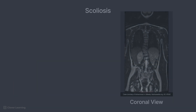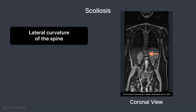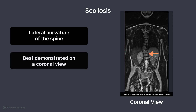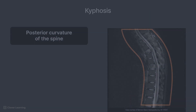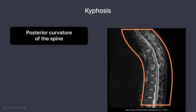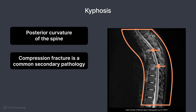Other bony pathology issues include scoliosis, which is the lateral curvature of the spine — a coronal image will demonstrate this best. Kyphosis is the posterior curvature of the spine, common in elderly female patients, and appears as a rounded back usually in the thoracic area with a stooped appearance. A secondary pathology to kyphosis is a compression fracture, which occurs when the vertebral bodies collapse on themselves, and is common in patients with osteoporosis or extreme kyphosis.